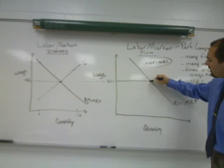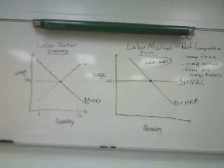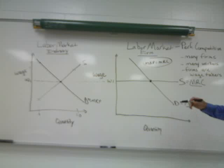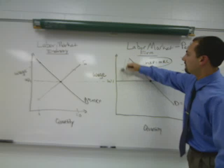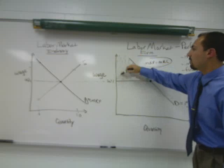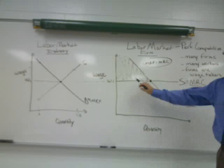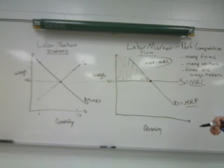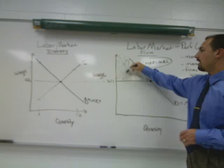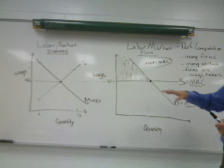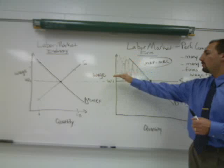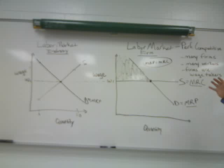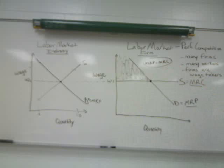The profit-maximizing rule of MRP equals MRC is represented by a specific point on the firm's graph — the point at which marginal revenue product equals marginal resource cost. The firm capitalizes on all the profit potential of the first workers, because this is the area where marginal revenue product exceeds marginal resource cost. These first workers are extremely productive, but the firm only needs to pay them the marginal resource cost. This has been a quick review of profit maximizing behavior for the firm in a perfectly competitive labor and resource market.